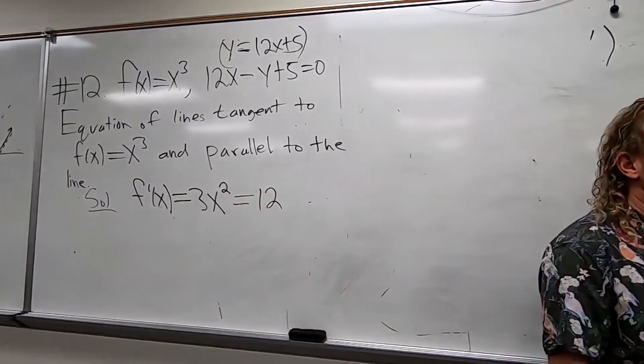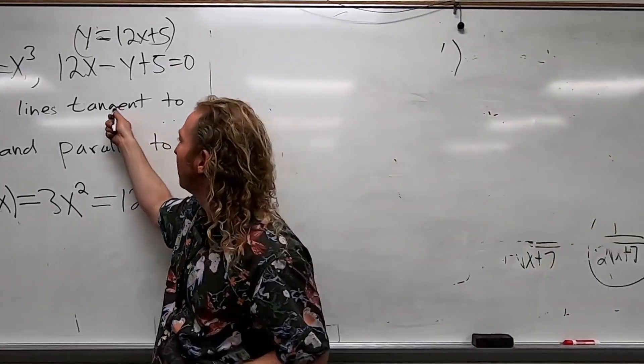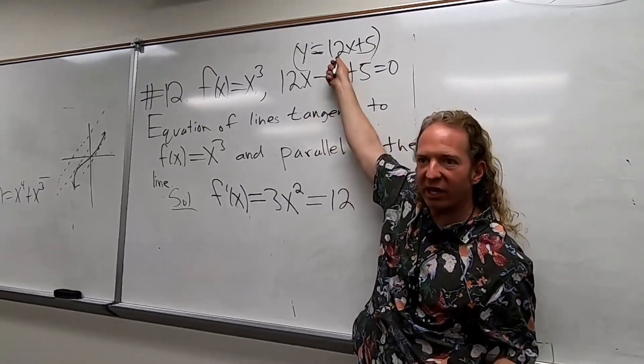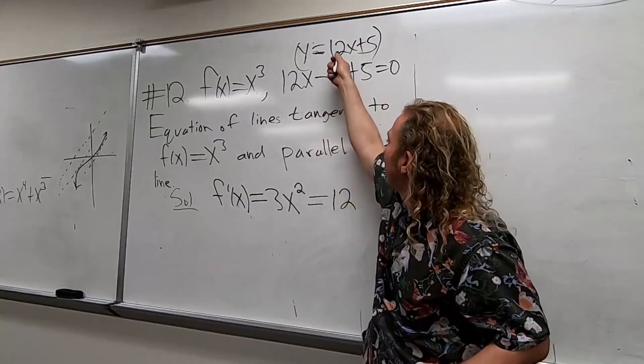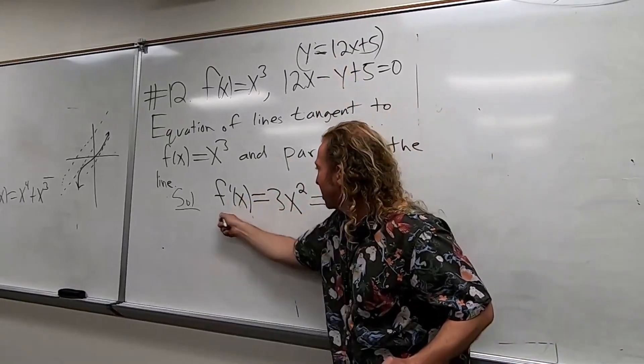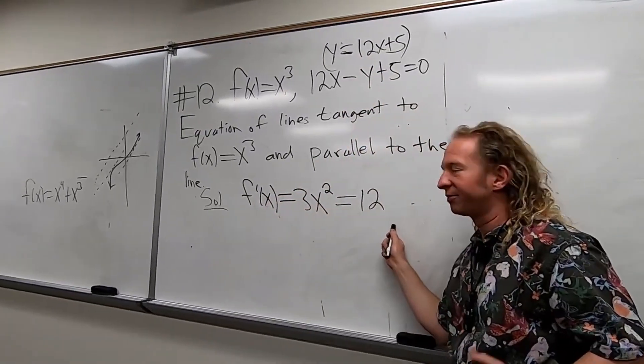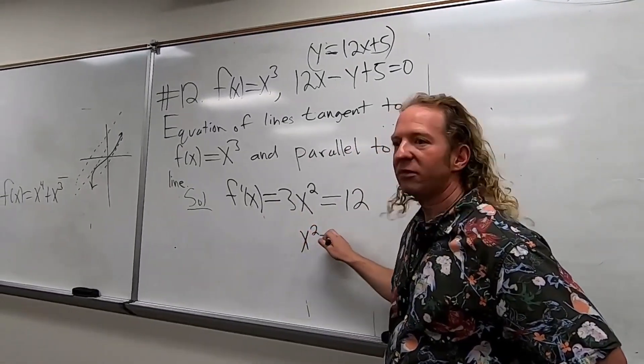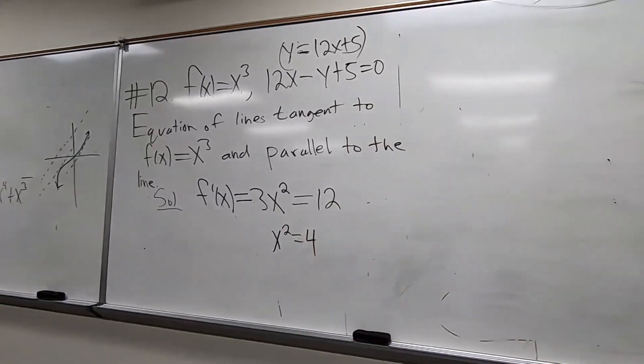And so what does this have to be equal to in this problem? 12, right? Because the tangent line is parallel to this line. So the tangent line has to have the same slope as this line. So the tangent line must have a slope of 12. This is the slope of the tangent line, and it must be equal to 12. So now you can use this to solve for x. So x squared is equal to 4. It's a really beautiful problem.